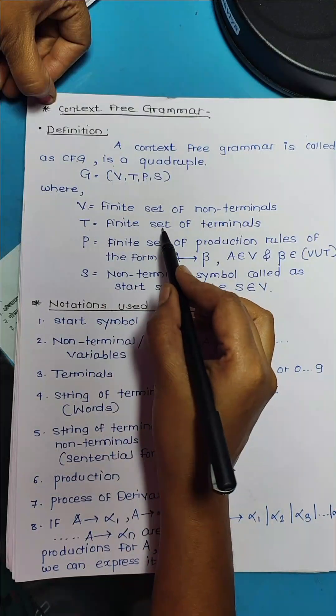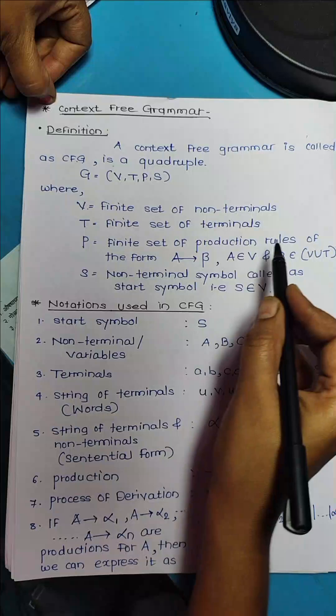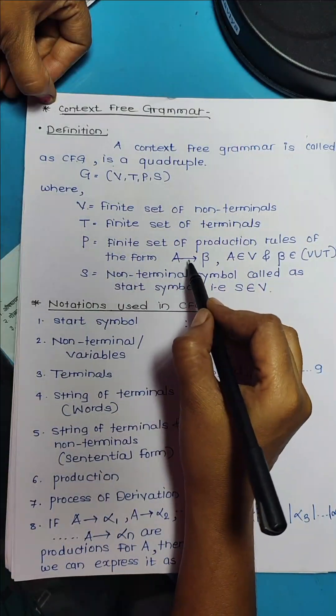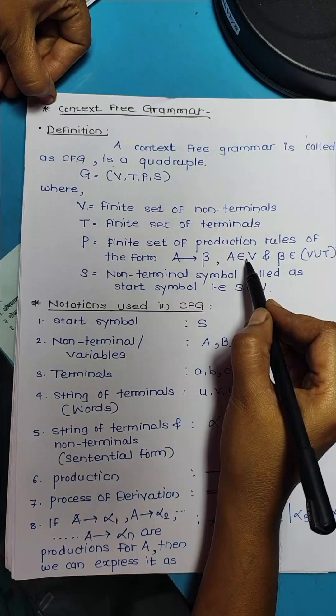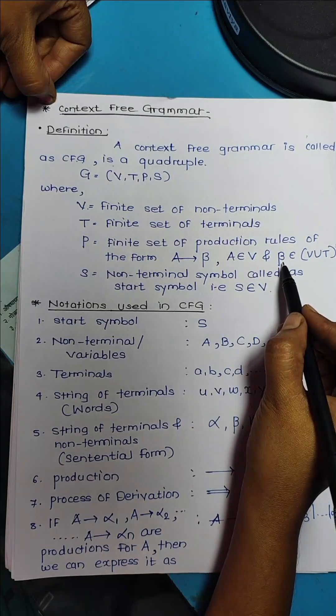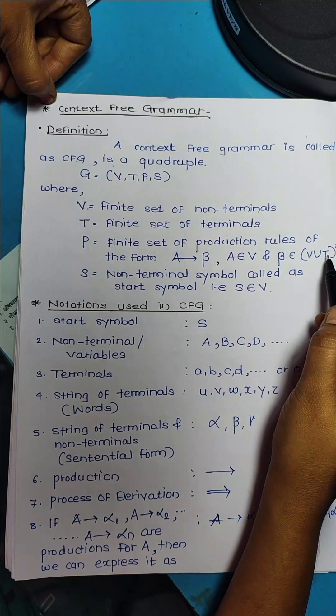T is a finite set of terminals. P is a finite set of production rules of the form A gives beta, where A is from the set of variables and beta belongs to the union of terminals as well as non-terminals.